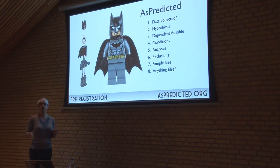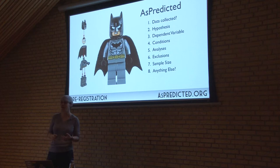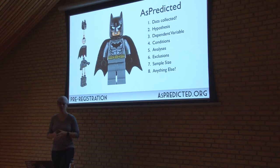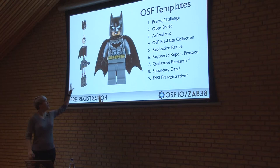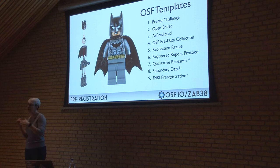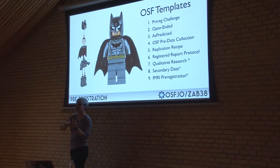I'll go through pre-registration quickly since we've talked about it a lot. There are a few places that can walk you through a pre-registration — simply saying what you're going to do as a plan, not a prison. Things change and they always change; pre-registrations are almost never executed exactly as planned. Simply letting the scientific record see what you planned, what went differently, and why you changed it, as transparently as possible — I think it can only help us. There are OSF templates for pre-registrations, including for qualitative research, secondary data, and fMRI.